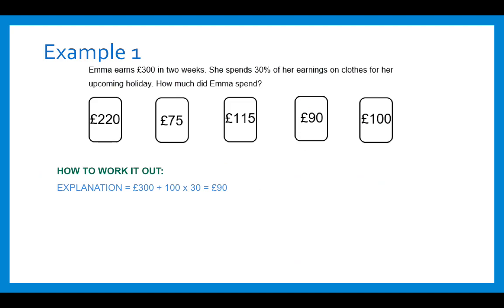Here is an example. Emma earns £300 in two weeks. She spends 30% of her earnings on clothes for her upcoming holiday — how much did Emma spend? Divide 300 by 100, then multiply by 30%, which gives you £90. So Emma spent £90 of her earnings.